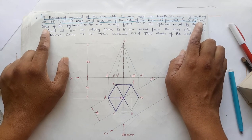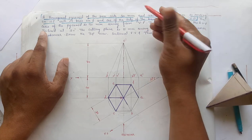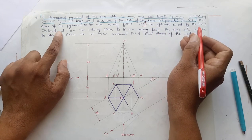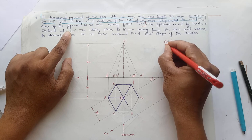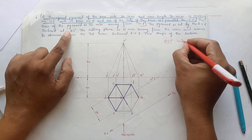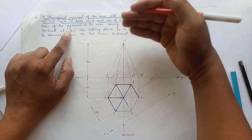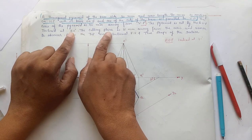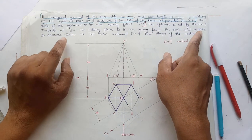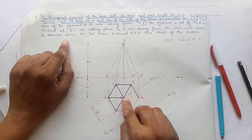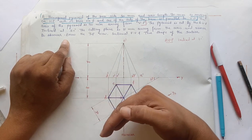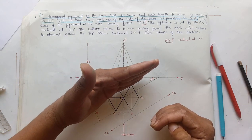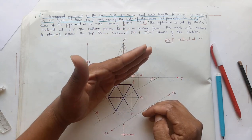Now we have to take the section of this solid. The pyramid is cut by an AVP inclined at 30 degrees, and the cutting plane is 15 mm away from the axis and nearer to the observer. Since the cutting plane is an AVP, we have to show the cutting plane in the plan. The cutting plane is 15 mm away from the apex point and nearer to the observer.